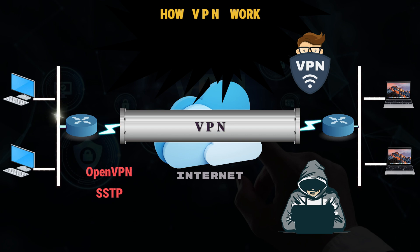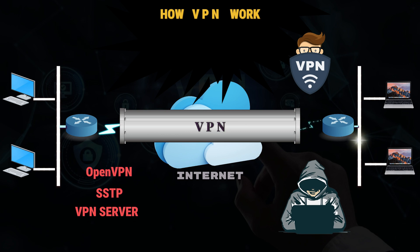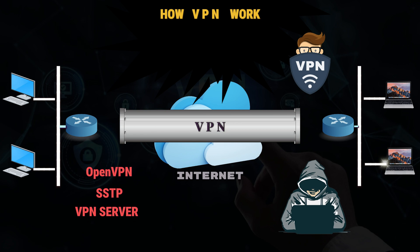VPNs associate a user's search history with the VPN server's IP address. VPN services will have servers located in different geographical areas, so it will look like the user could be from any one of those locations.